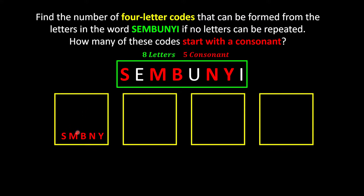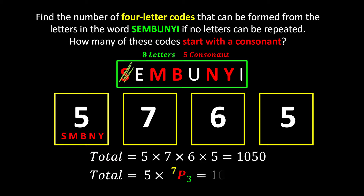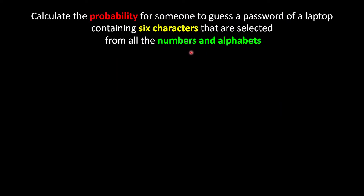So the first slot has 5 ways to choose. Once I pick — let's say S — I will be left with only 7 letters. The remaining 7 letters can rearrange themselves in the remaining 3 slots. Since this is also a continuous event, I can multiply them together. This is why I have 1050 ways. The 5 is for the first slot and the remaining 7 letters can be rearranged in the remaining 3 slots using 7P3.